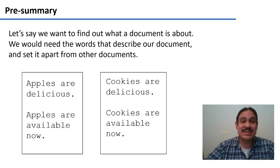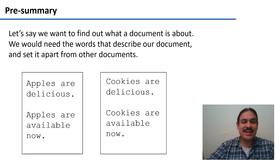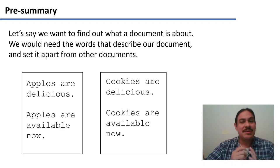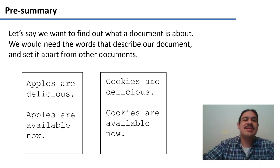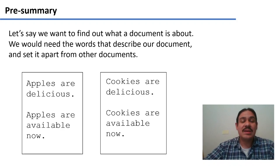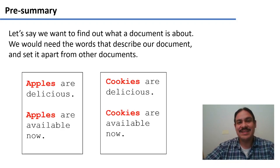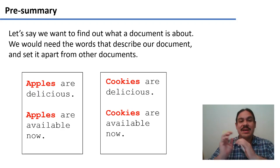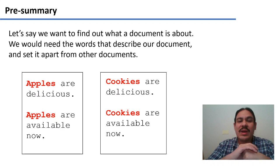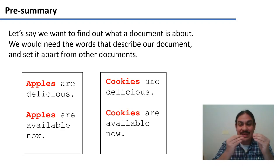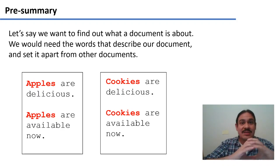This is an extremely simple example where we have two documents. One says 'apples are delicious' and the other one says 'cookies are delicious.' What are these two documents about and how is the first one different from the second? The difference cannot be in the words 'are' or 'delicious' because both documents contain those words. The difference must reside in what's unique to each of them: apples for the first one and cookies for the second. When we are trying to figure out how to describe a document, we need to look at the document itself but also at the entire collection it belongs to, so that we can figure out what sets it apart from the others.